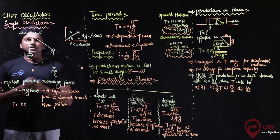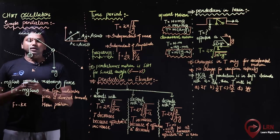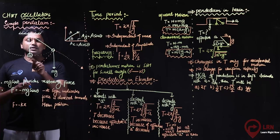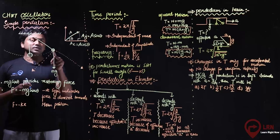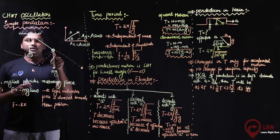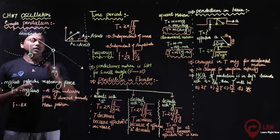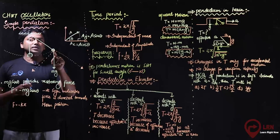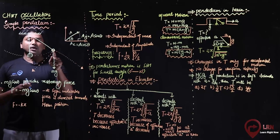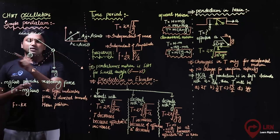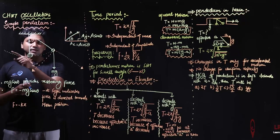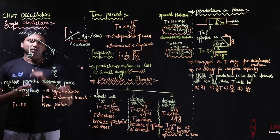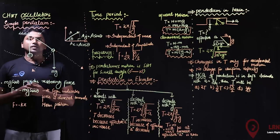Then we talk about the motion of the pendulum. The pendulum swings between what we call the mean position and the extreme position. We leave it from the extreme position and the pendulum repeats its motion along this path. We say that the simple pendulum is performing a vibratory motion.